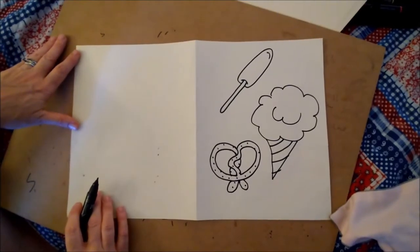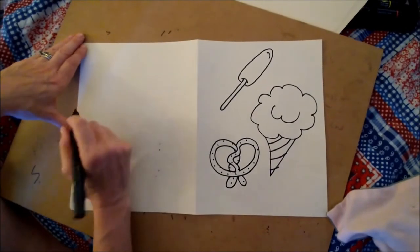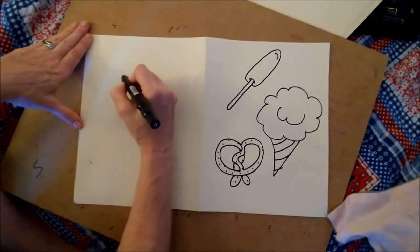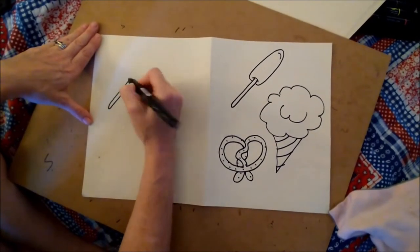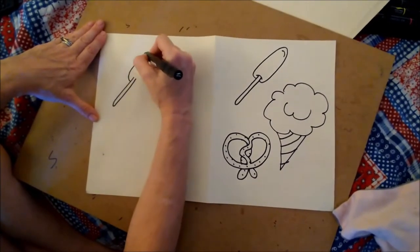All right, this is my favorite part of the carnival and it makes me so hungry when I see these at amusement parks. We're going to start off with the corn dog. The corn dog is really simple. We're just going to do a nice long stick and then we're going to do a long oval all the way around the top.